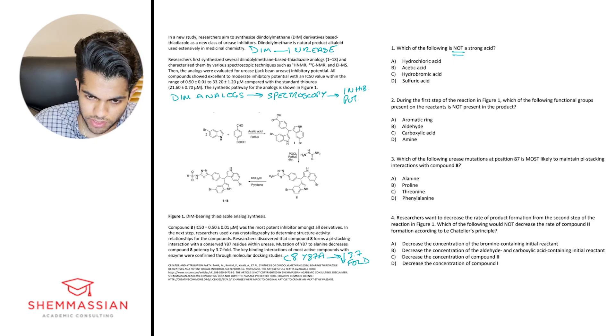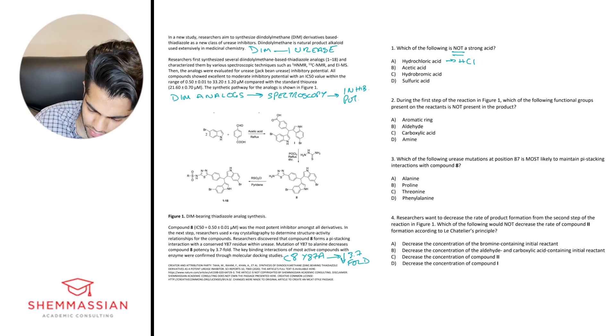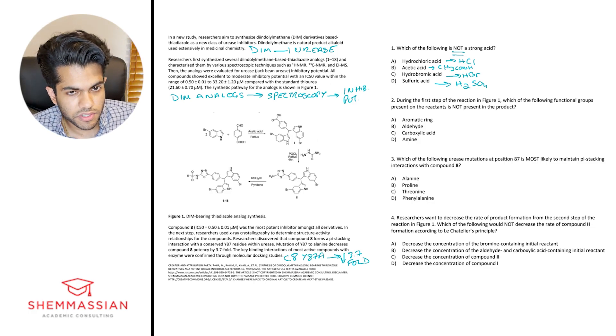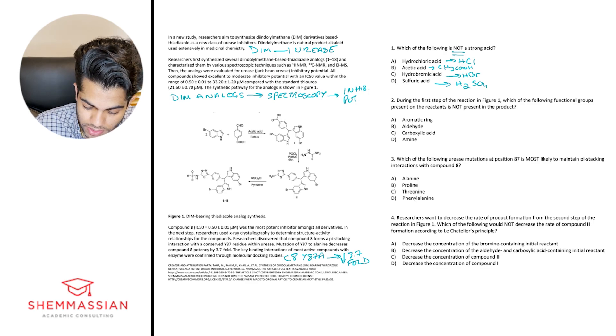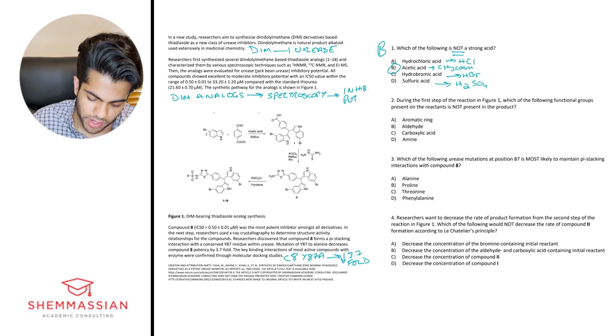So the answer choices they give us are A hydrochloric acid, so that's HCl. They gave us acetic acid so CH3COOH, hydrobromic acid. I see HBr and then sulfuric acid, which is H2SO4. So essentially for this question, you really just need to know what are your strong acids. So I know HCl, HBr and H2SO4 are our strong acids. So acetic acid is going to be the right answer here. Acetic acid is known as a weak acid. So B will be the right answer.